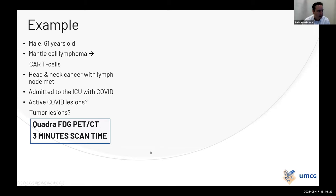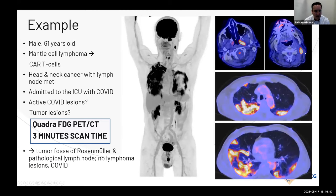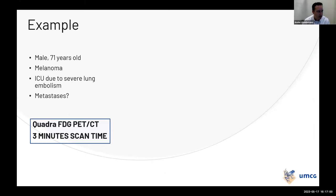Another case: a 61-year-old male with mantle cell lymphoma treated with CAR T-cells, now with neck lymph node metastasis and admitted to the ICU with COVID. The question was: are there active COVID lesions or tumor lesions? The three-minute Quadra scan showed the tumor in the nasopharyngeal fossa and lymph node metastases. All lung lesions were from COVID disease and not from lymphoma. A nice image — only three minutes scan time.